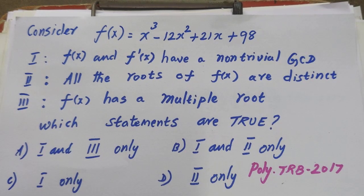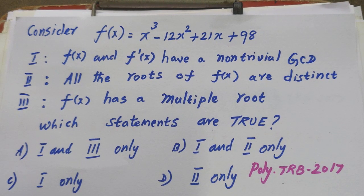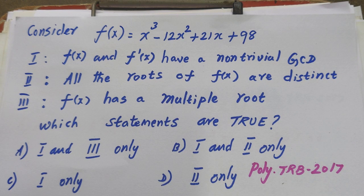Welcome to Kamal Online Max. This is a Politechnik KRB 2017 Linear Algebra question. Consider f of x equals x cubed minus 12x squared plus 21x plus 98. The first statement says f of x and f dash of x have a non-trivial GCD.